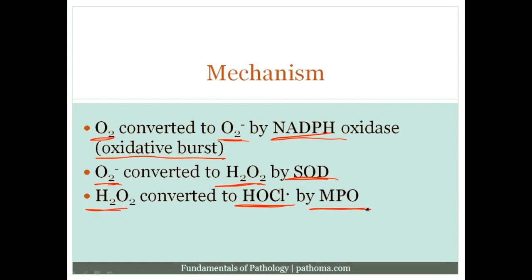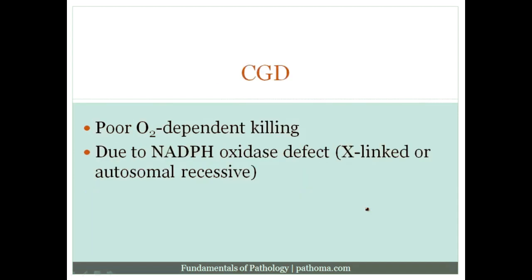All of these are high yield — these enzymes are high yield. Now, that's the normal pathway, and there are a couple of disease states in which this normal pathway can be disrupted. The first of those is called chronic granulomatous disease.